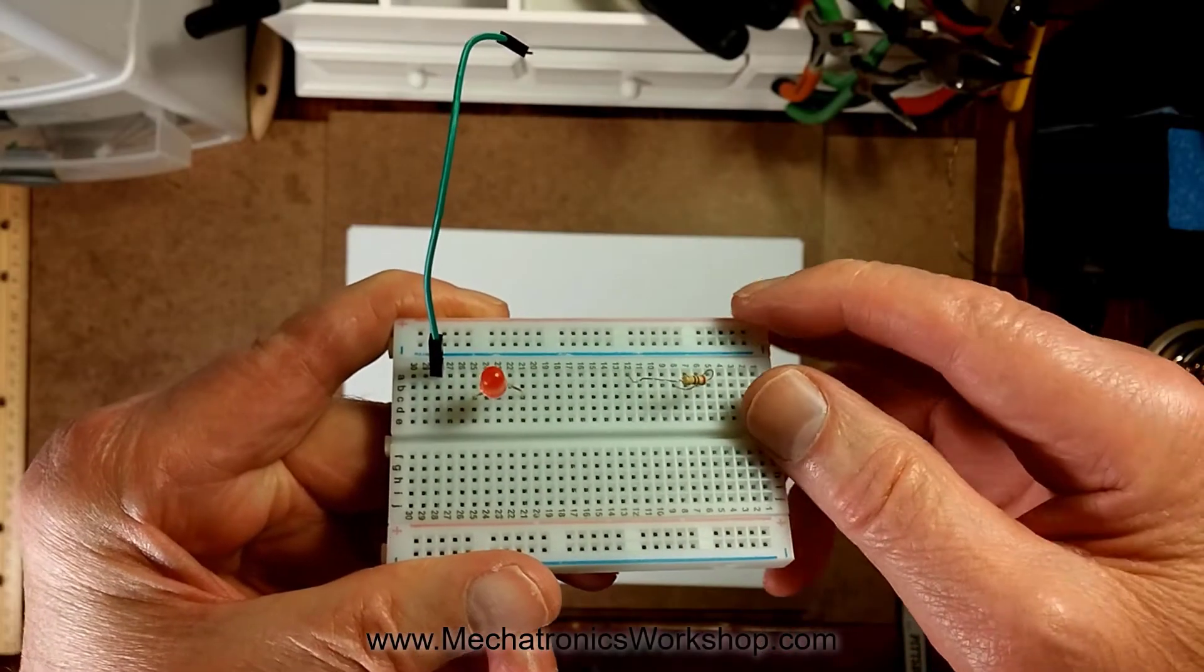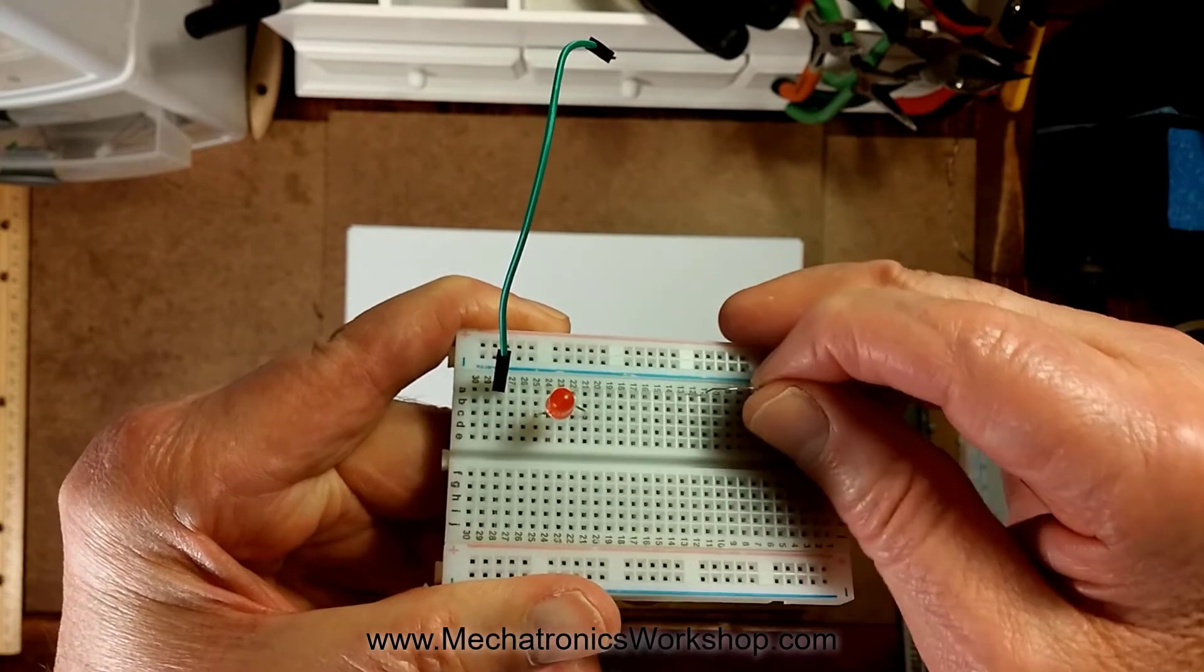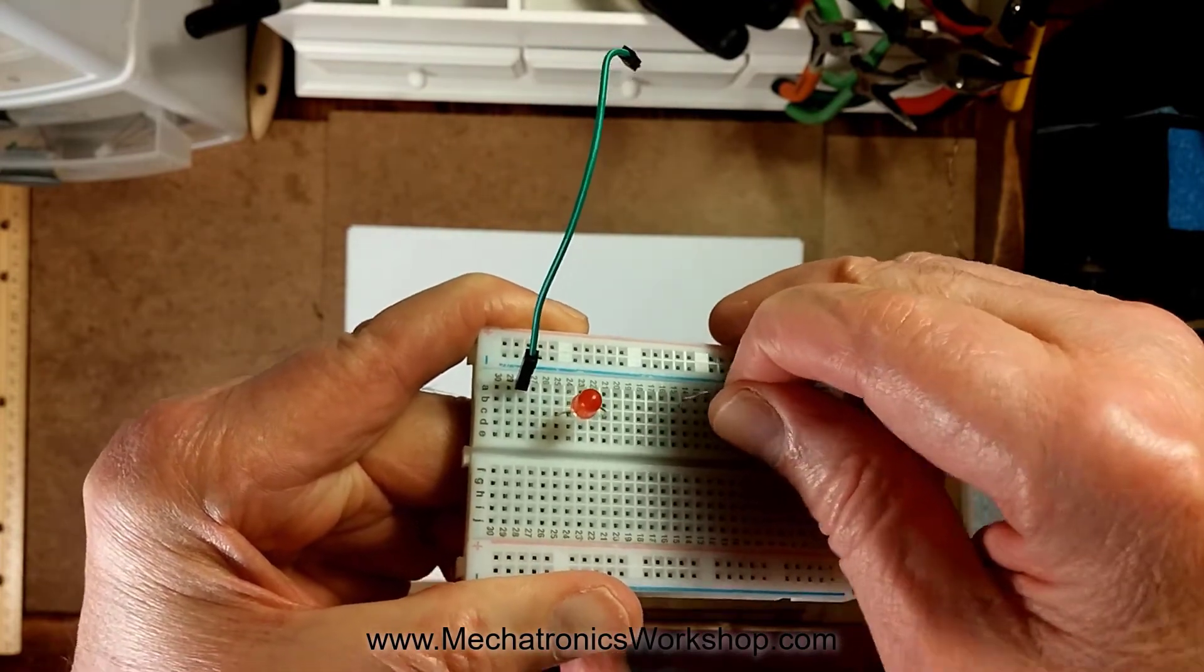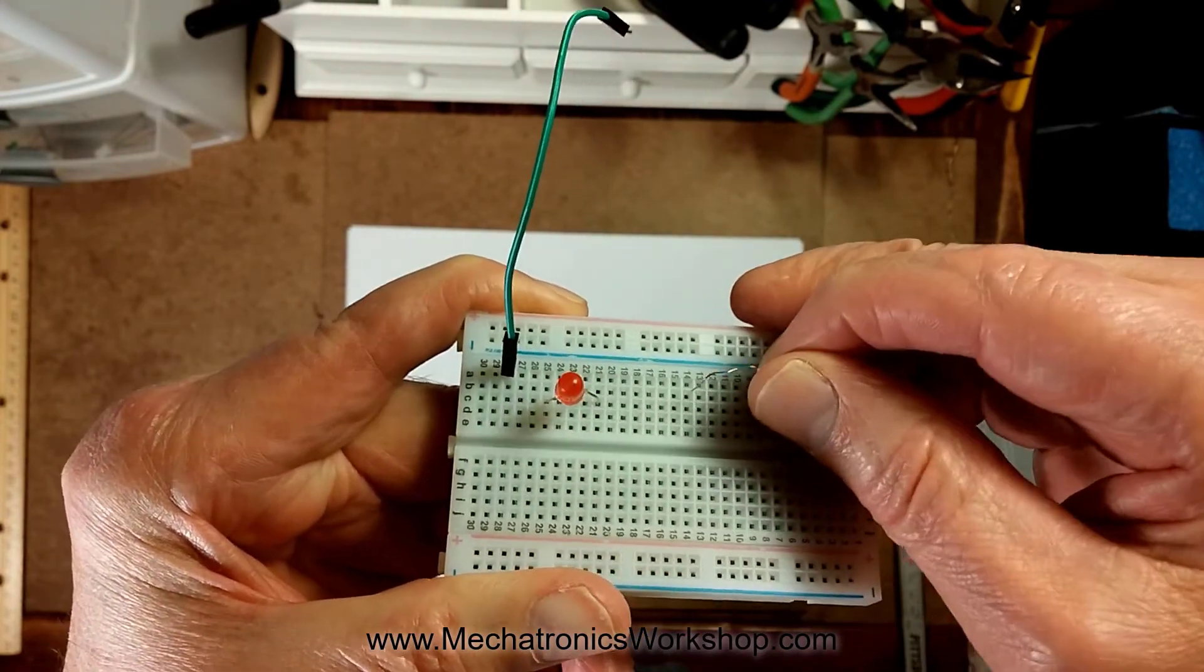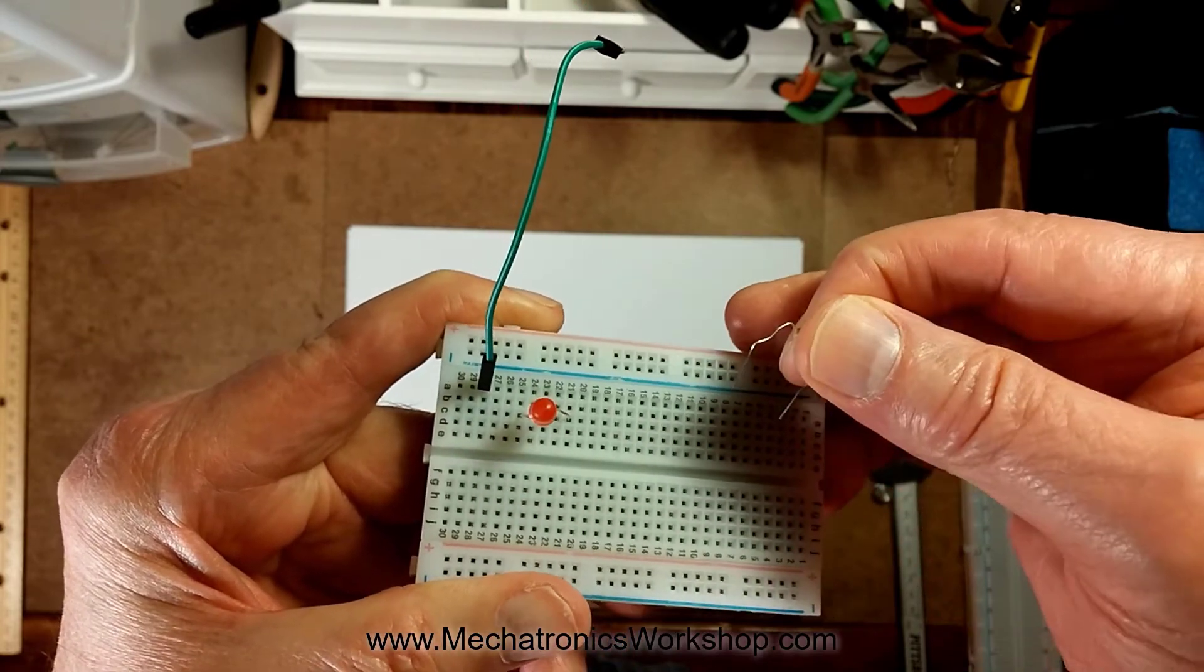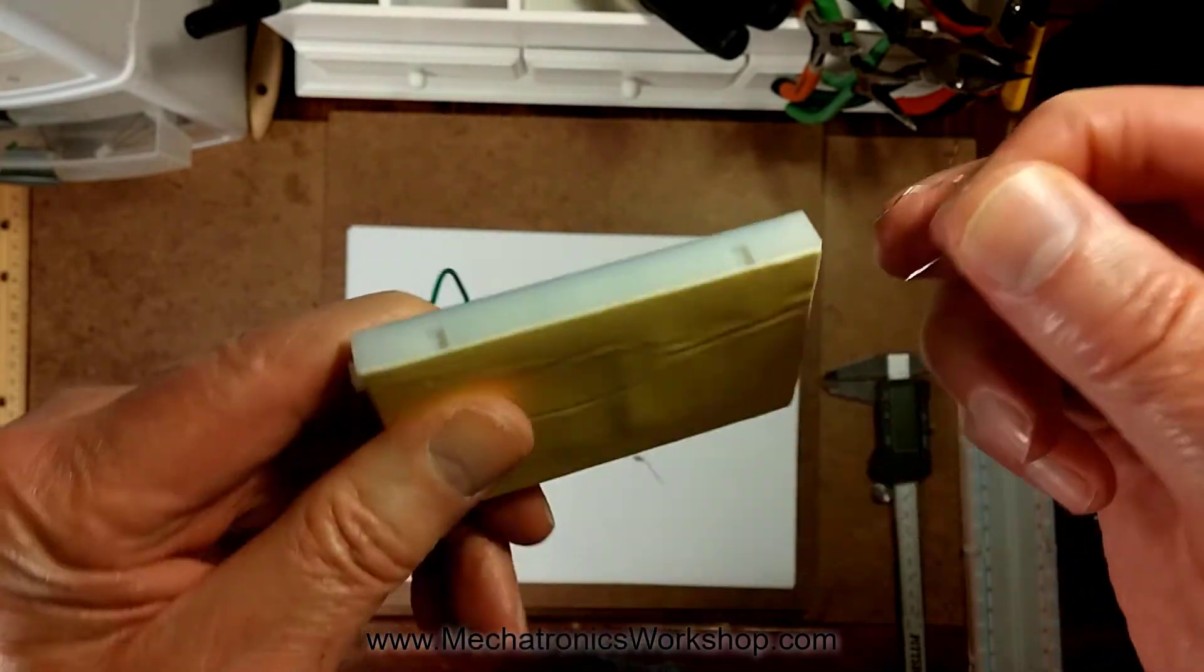Have you ever been trying to build a little circuit on some of these breadboards and you're trying to get your resistors in there and they just don't ever seem to go and you just wind up with these crazy squiggly legs that are all scrunched up?